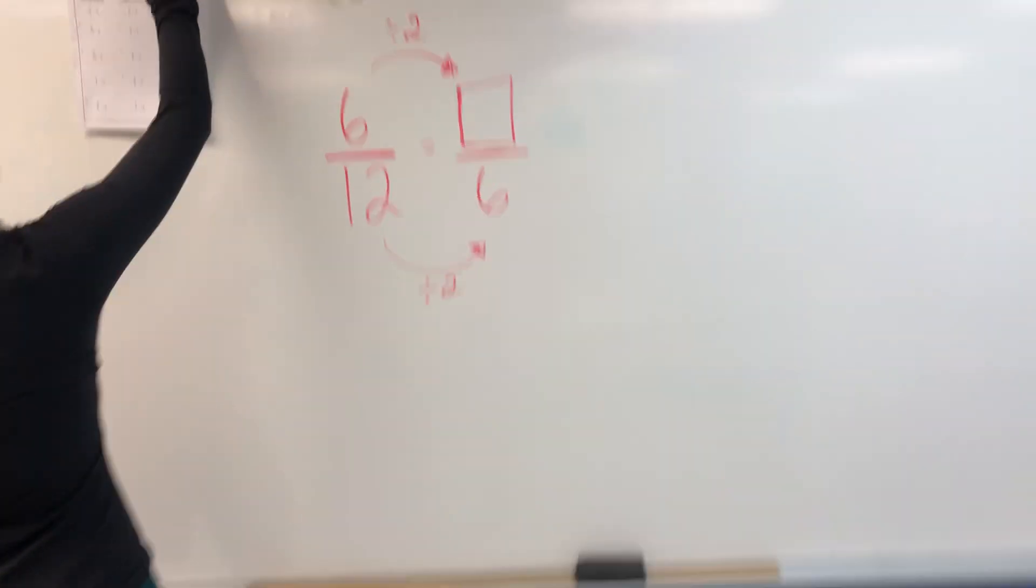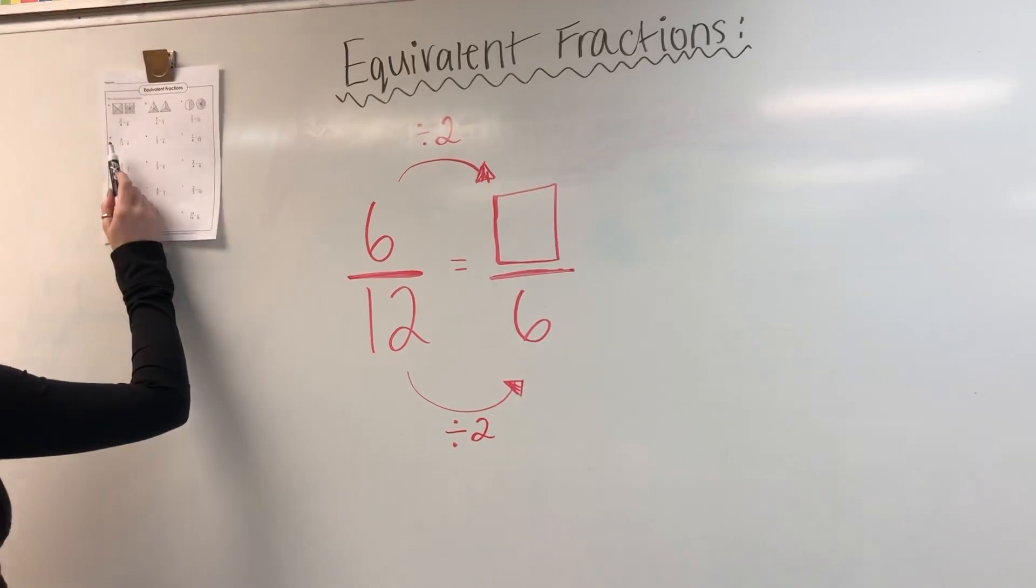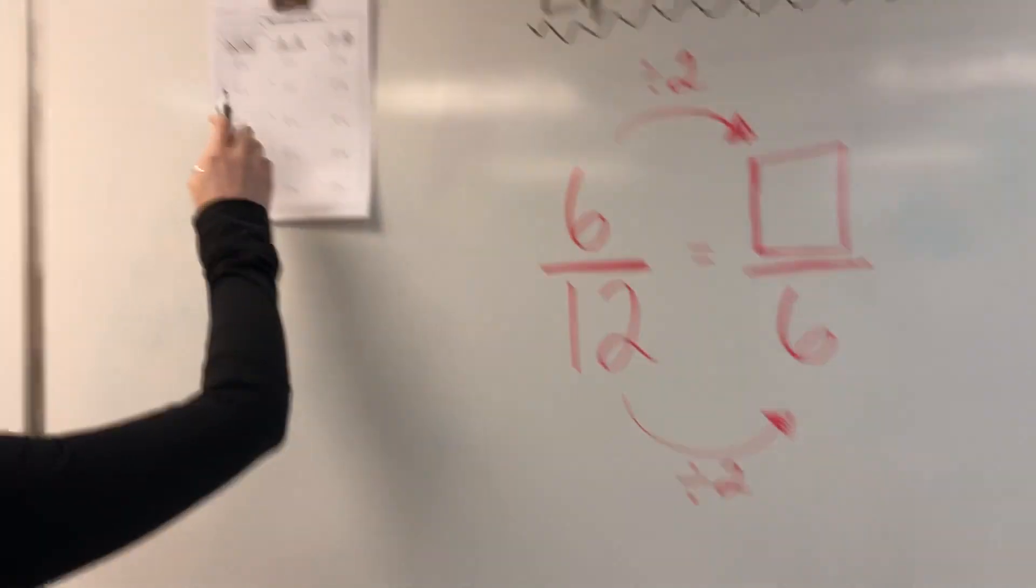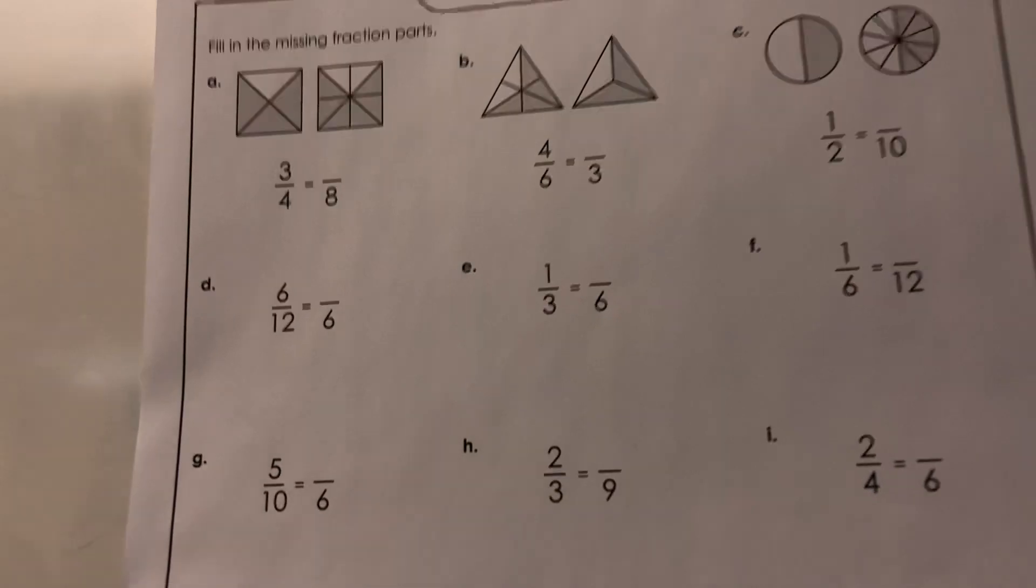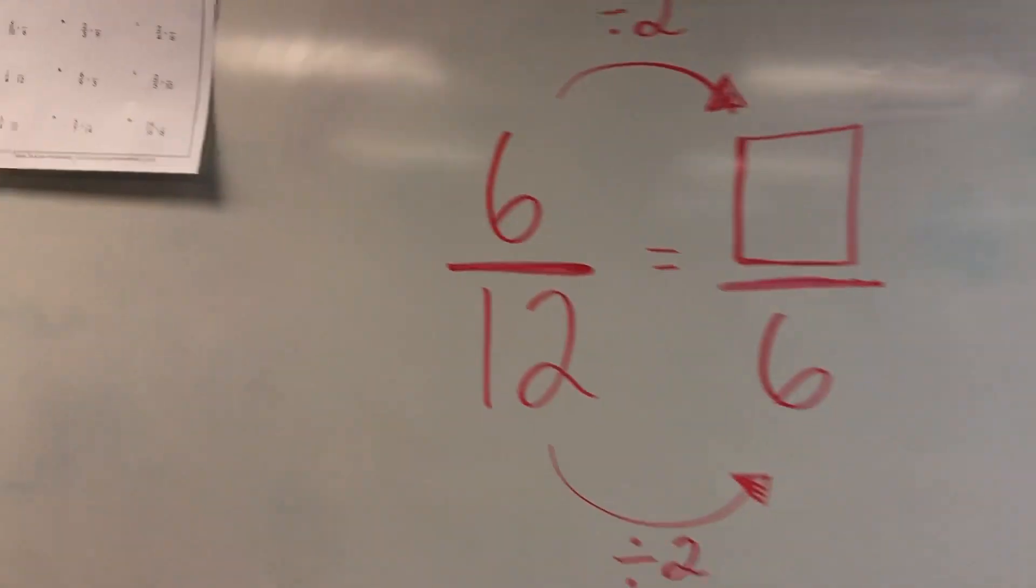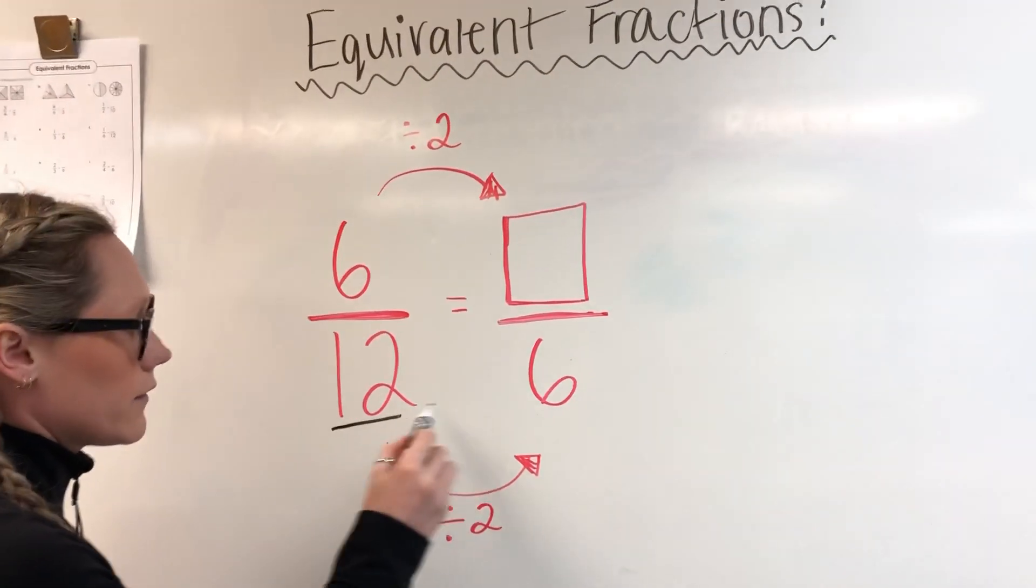So this is just me adding to that. First, D is 6 over 12. Well, how do I get from 12 to 6?